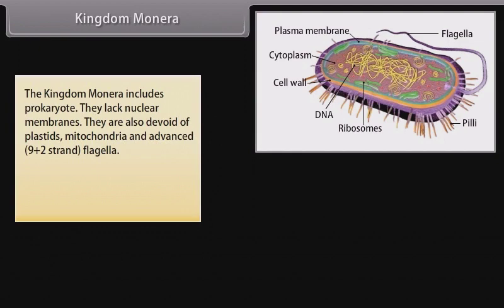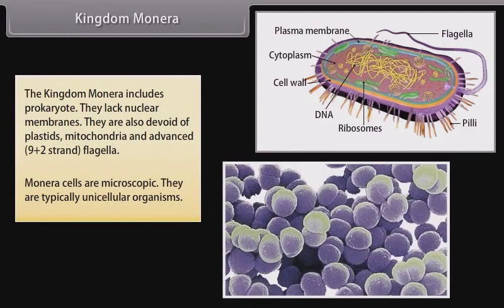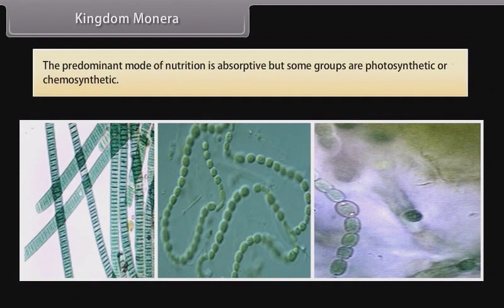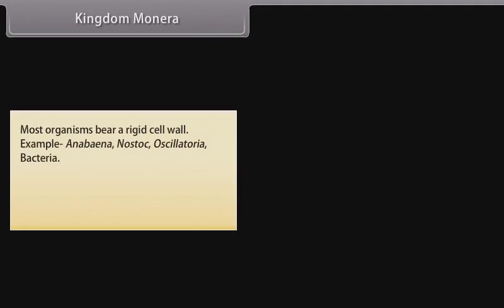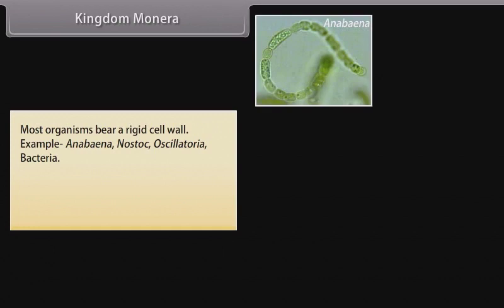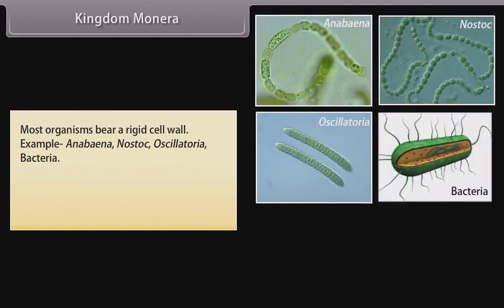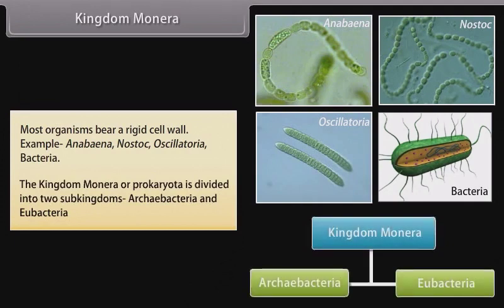Kingdom Monera includes prokaryotes. They lack nuclear membranes and are also devoid of plastids, mitochondria, and advanced 9+2 strand flagella. Monera cells are microscopic and typically unicellular. The predominant mode of nutrition is absorptive, but some groups are photosynthetic or chemosynthetic. Reproduction is primarily asexual by fission or budding; proto-sexual phenomena also occur. Most organisms bear a rigid cell wall. Examples: Anabaena, Nostoc, Oscillatoria, bacteria. Kingdom Monera is divided into two sub-kingdoms: Archibacteria and Eubacteria.